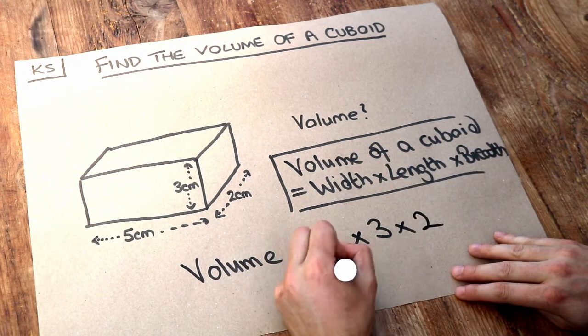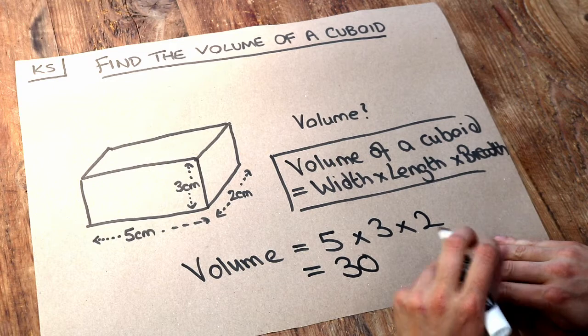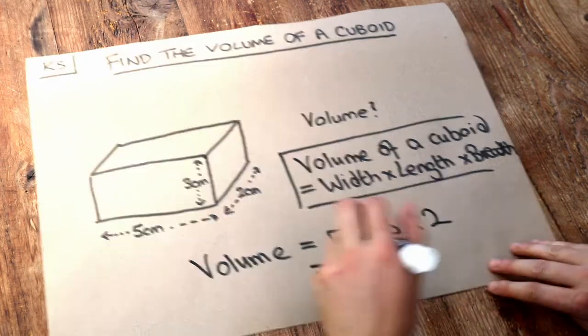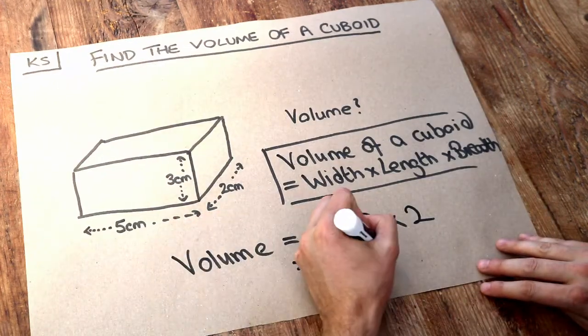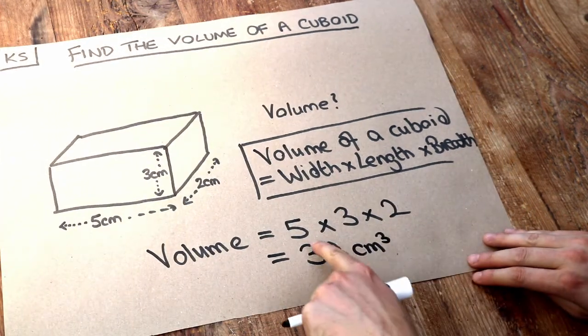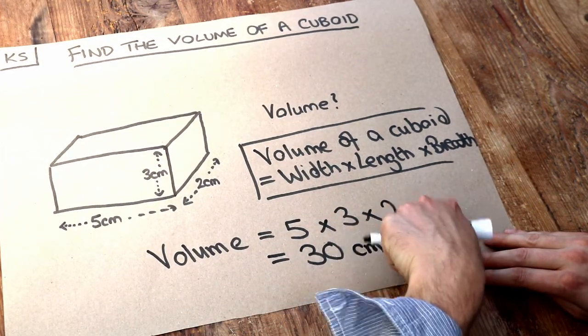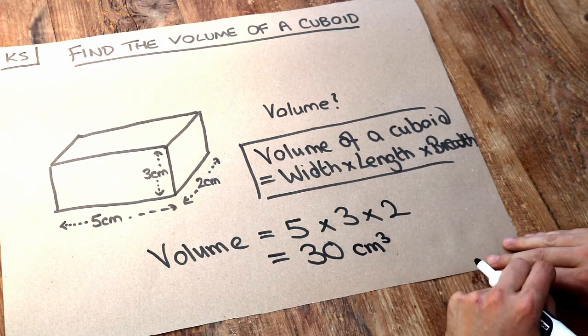And that is 30. And then we just need to make note of the unit. Now these are all in centimeters so the unit for volume is going to be centimeters cubed because you've effectively got centimeters times centimeters times centimeters that's going to be centimeters cubed.